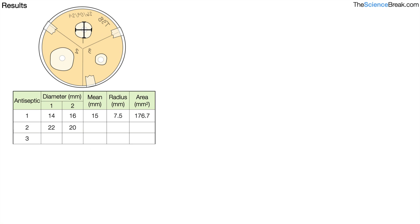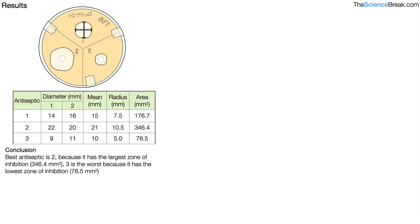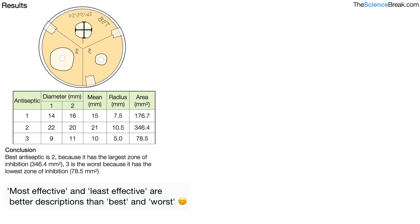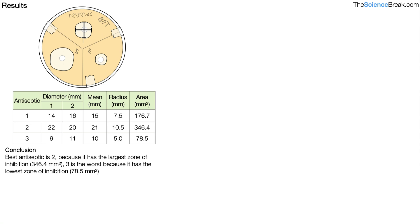We do the same for antiseptics 2 and 3, recording two diameters then calculating the mean, radius, and area for each. Pause here and work through the calculations to make sure you get the same answers. From the results, the best antiseptic is number 2 because it has the largest zone of inhibition at 346.4 mm². Number 3 is the worst antiseptic because it has the lowest area of dead bacteria at 78.5 mm².